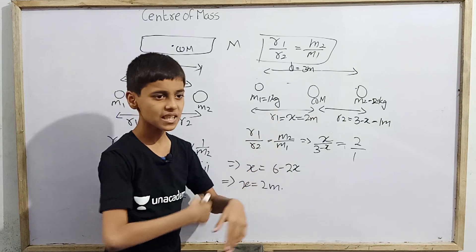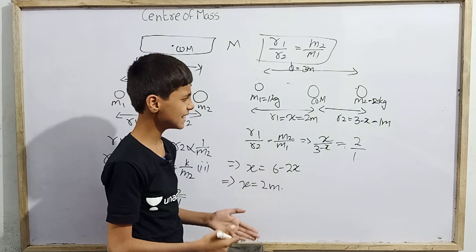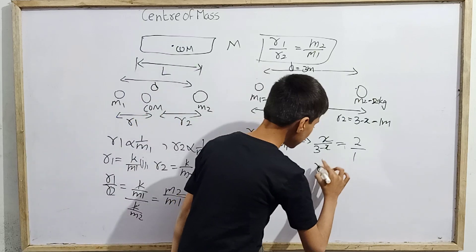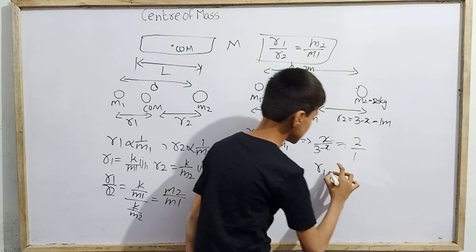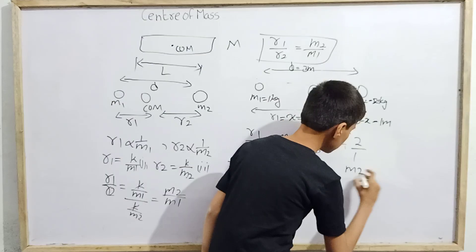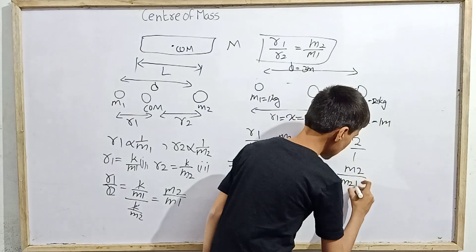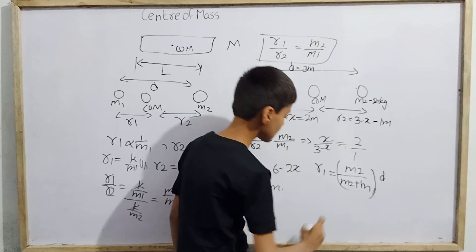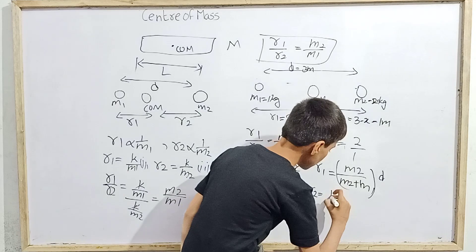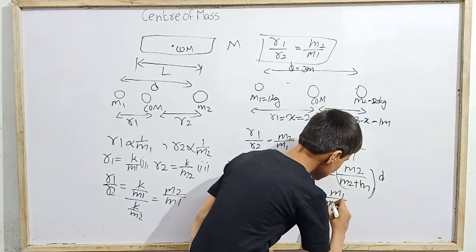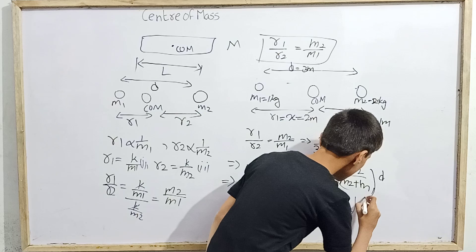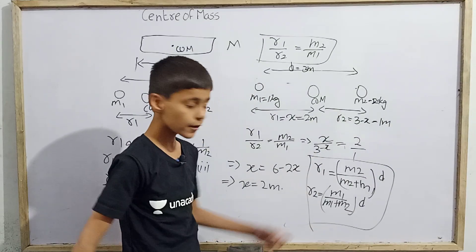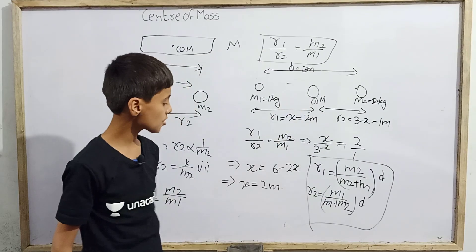In some cases this approach may take a lot of time, so if you want a shortcut, you can apply these two equations: r1 equals m2 divided by (m1 plus m2), in brackets, times d; and r2 equals m1 divided by (m1 plus m2), in brackets, times d. These are two important alternative equations.